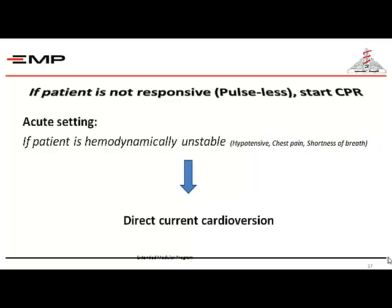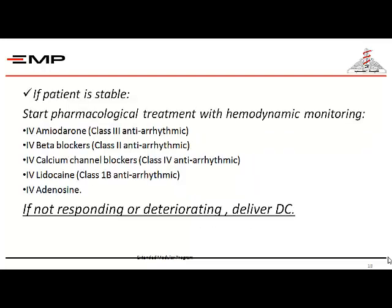If the patient is unstable, you have to give DC cardioversion. If the patient is stable, I can start a variety of pharmacological treatments with strict hemodynamic monitoring, such as IV amiodarone (class 3 antiarrhythmic), IV beta blocker (class 2), IV calcium blocker (class 4), IV lidocaine (class 1b antiarrhythmic), or IV adenosine — which sometimes works with certain types of ventricular tachycardia such as vascular VT or idiopathic outflow ventricular tachycardia. Even if the patient is stable but not responding to any pharmacological therapy, I must give DC cardioversion.